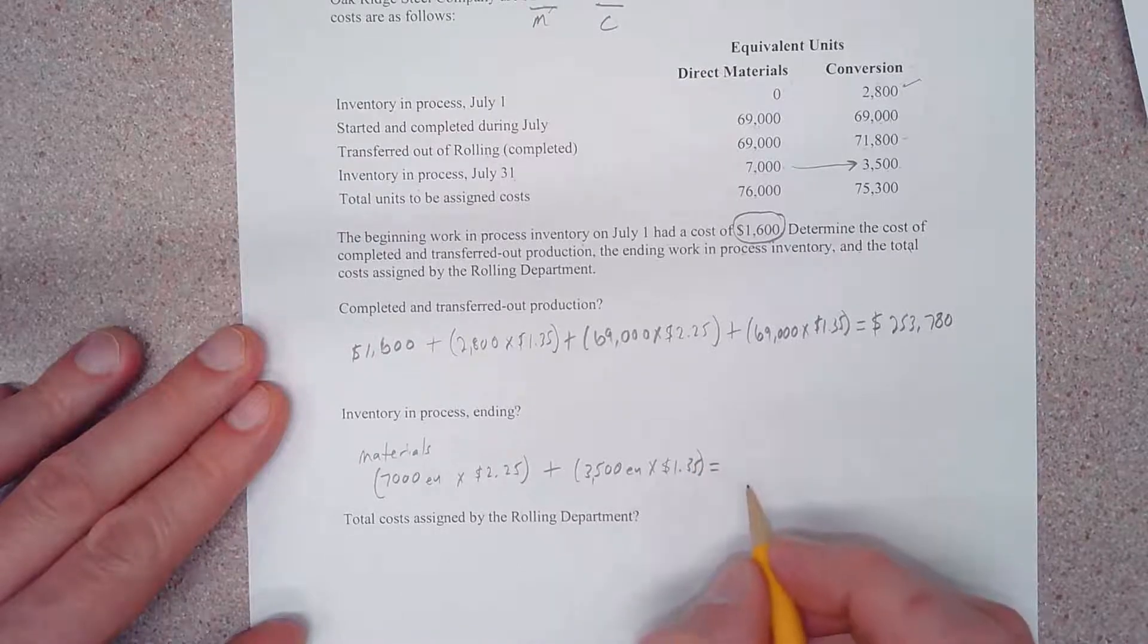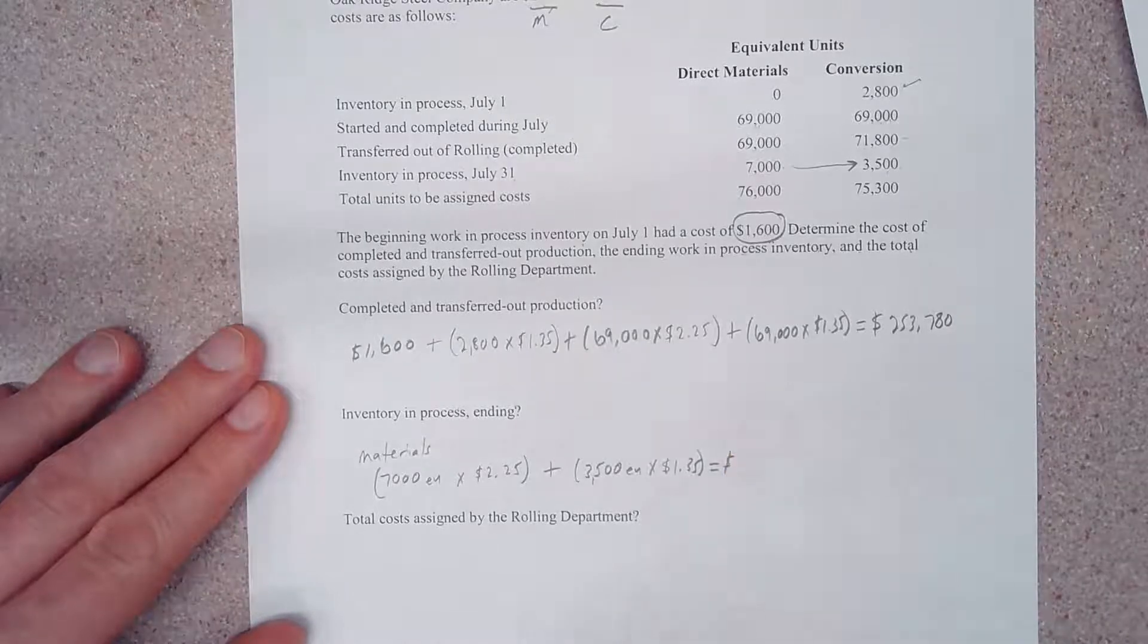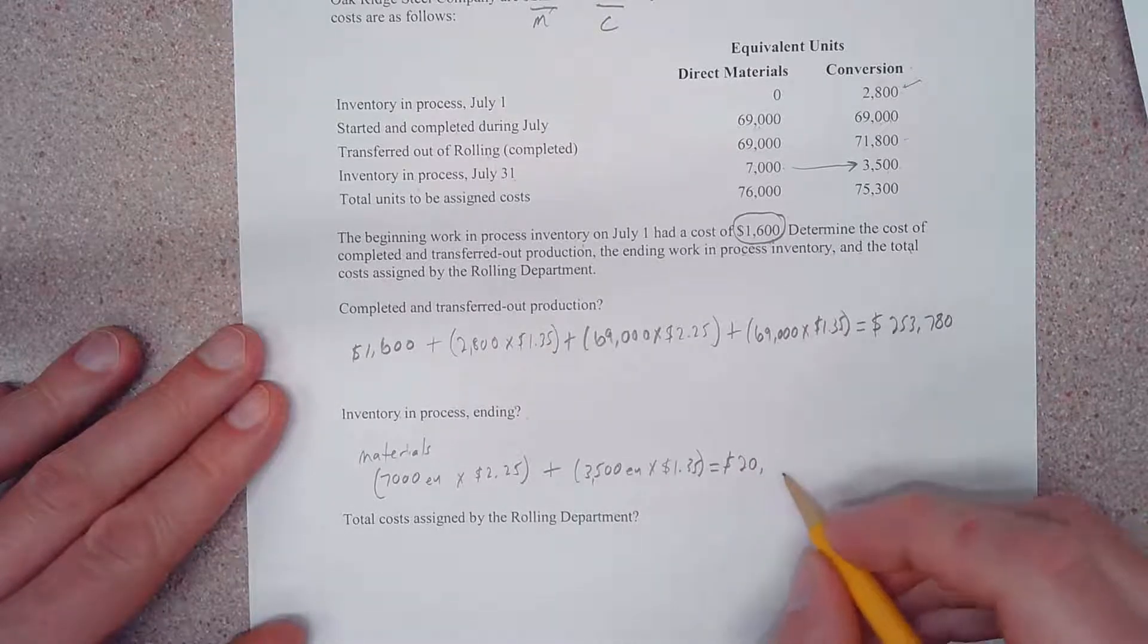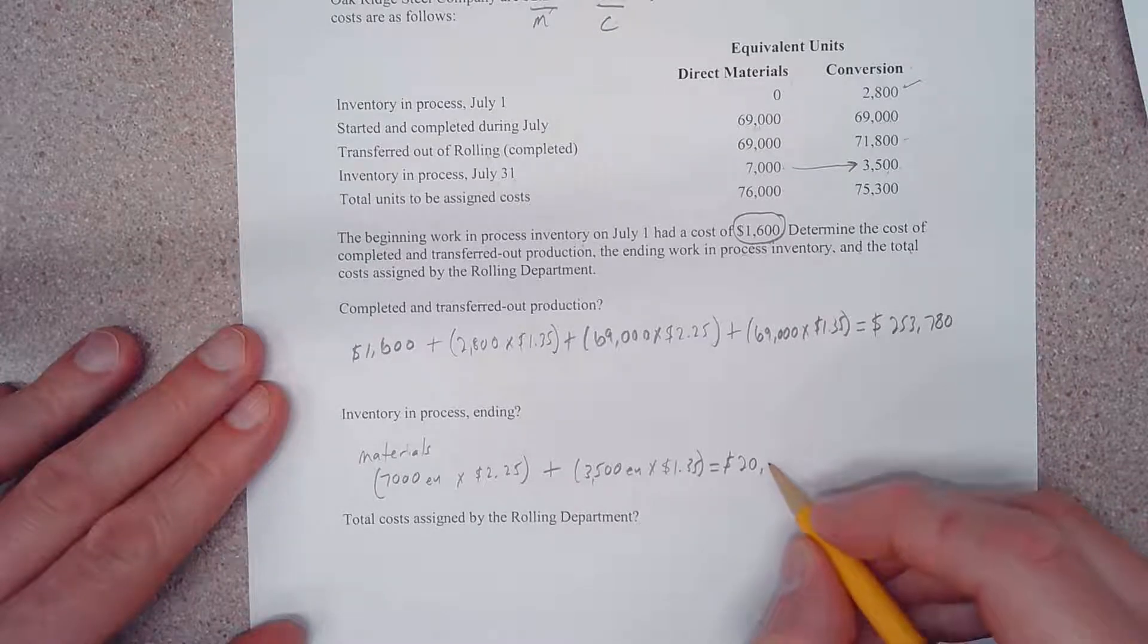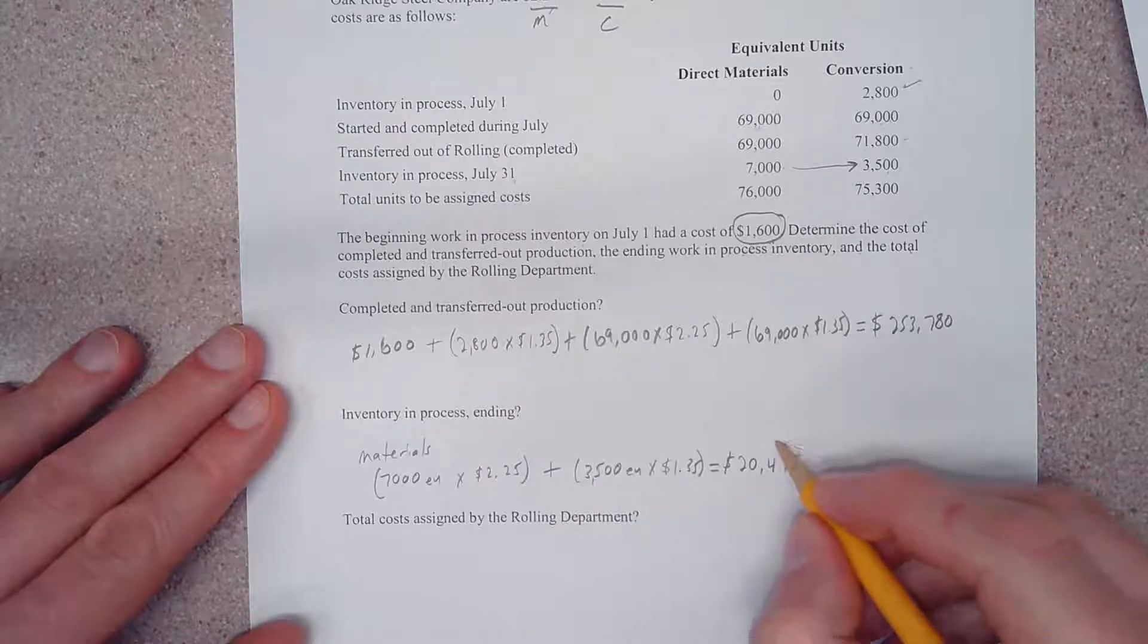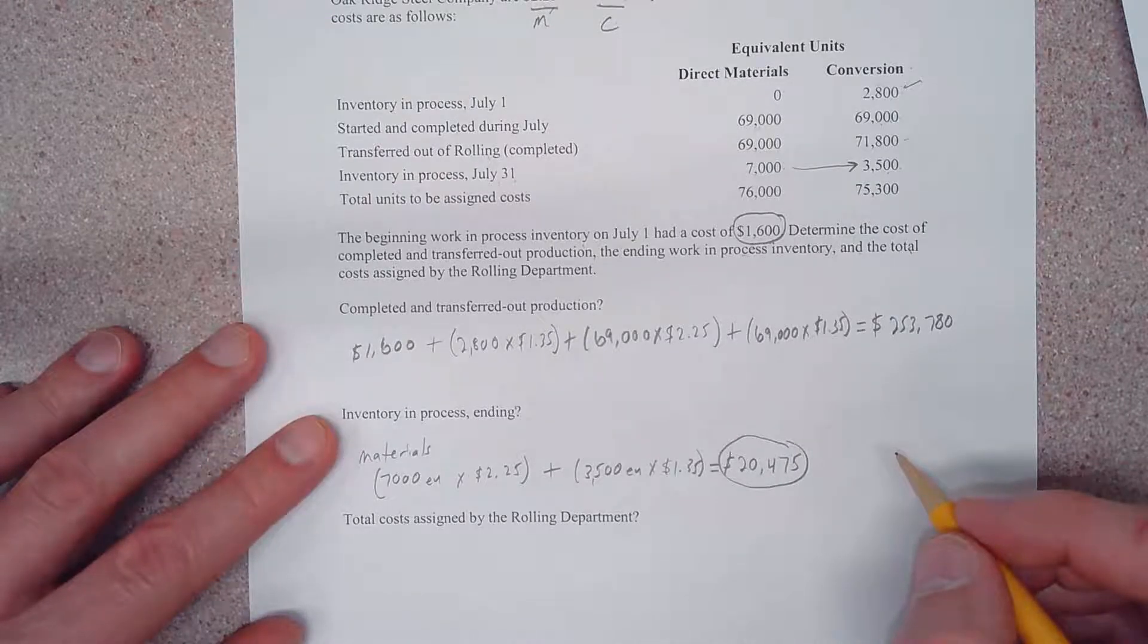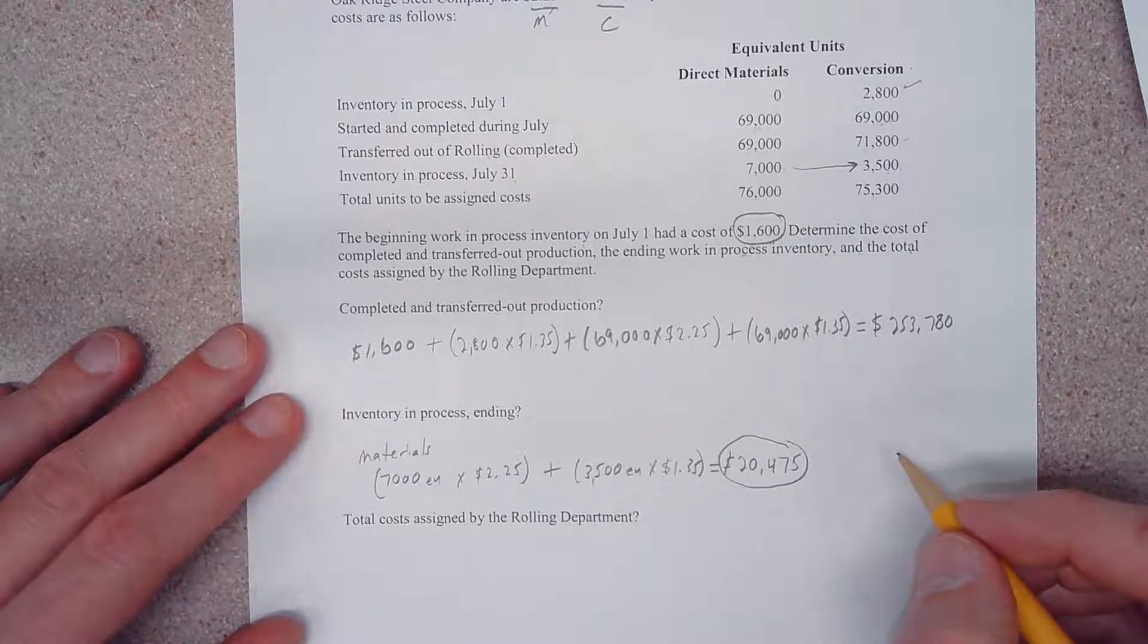I'll give you a moment to make that calculation if you haven't done so already. When we execute those two equations and add them together, we'll come up with $20,475. That is the value of our ending inventory in process - $20,475.